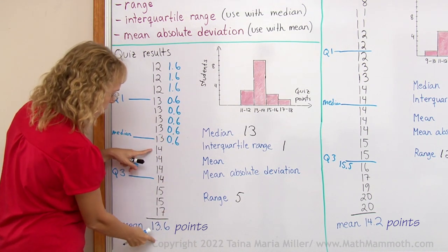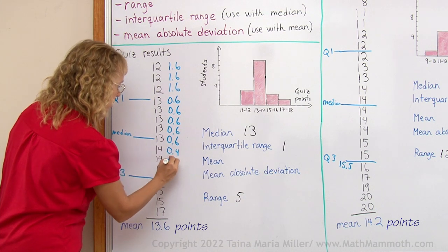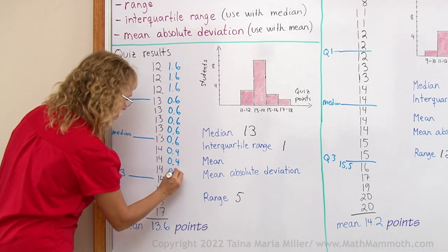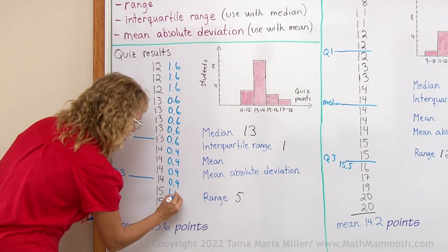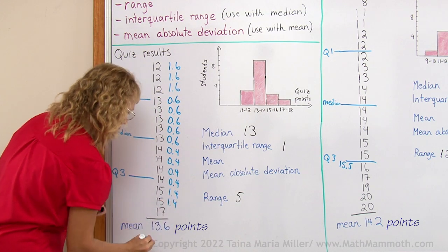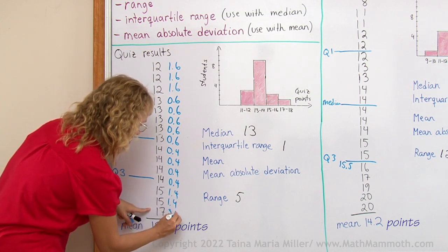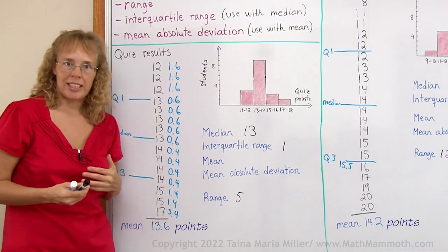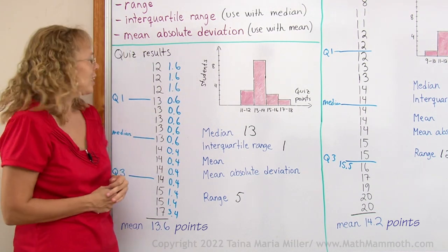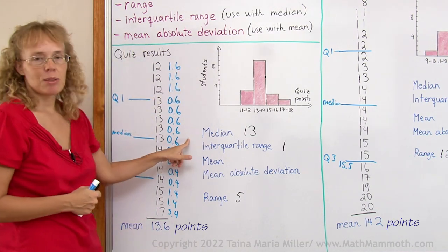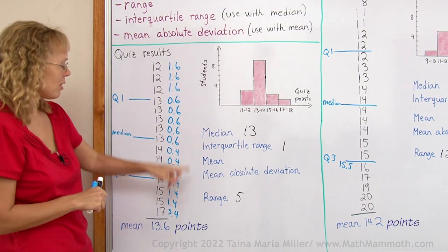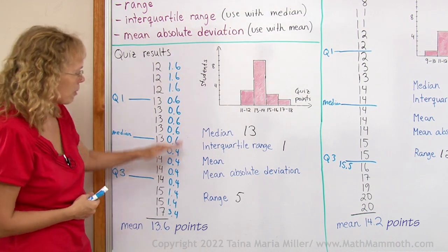Then 14 and 13.6, they differ by 4 tenths. And here they differ by 1.4 and lastly then 3.4. And these differences are always taken as positives. You cannot take some of them as negative numbers because then they would cancel out with the positives. So everything is taken positive.